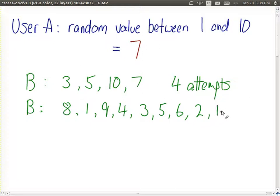2. And now we've tried all numbers but one. So B finally tries the last number and says, did you select 7? And yes. We've finally got the value that A chose. In this case, it took 10 attempts.